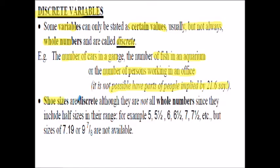Shoe sizes are discrete because although not always whole numbers they include half sizes - for example you have a five, five and a half, six, six and a half shoe size. You don't have a 7.19 shoe size or a nine and seven eighths shoe size - that's not normally available. So shoe sizes, like shirt sizes, are classified as discrete.